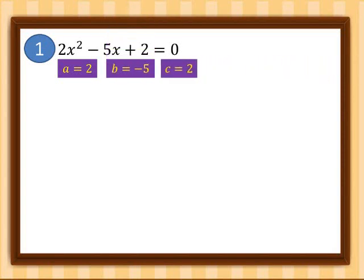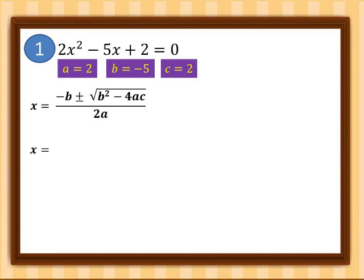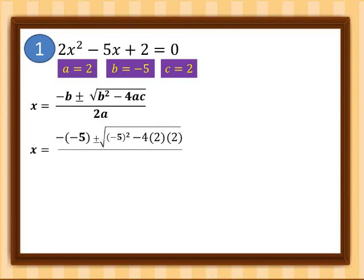We will use the quadratic formula: x = (−b ± √(b² − 4ac)) / 2a. Let's substitute the values of a, b, and c. So x = (−(−5) ± √((−5)² − 4·2·2)) / (2·2).